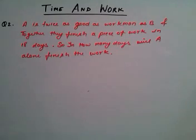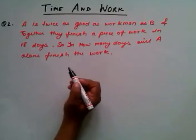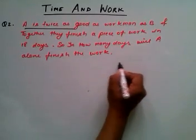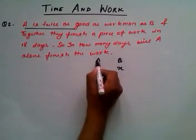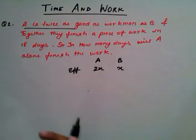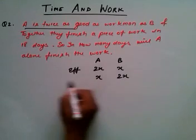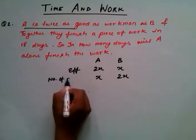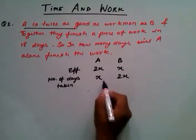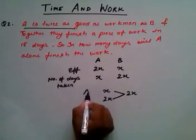Here is the next question: A is twice as good a workman as B, and together they finish a piece of work in 18 days. In how many days will A alone finish the work? Since the efficiency of A is twice that of B, let's take efficiency of B as X, then efficiency of A is 2X. Since efficiency and number of days taken are inversely proportional, the number of days taken by A is X and by B is 2X. We take the LCM of X and 2X, which is 2X, as the total work.